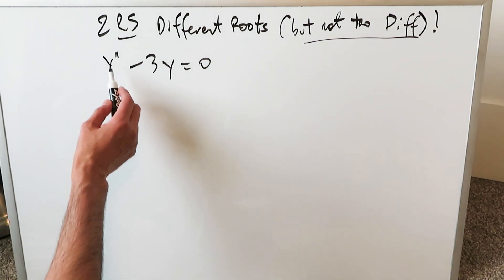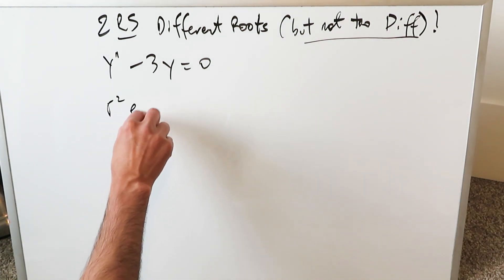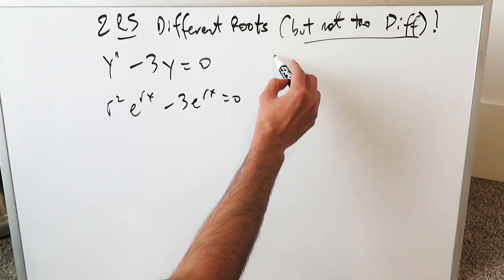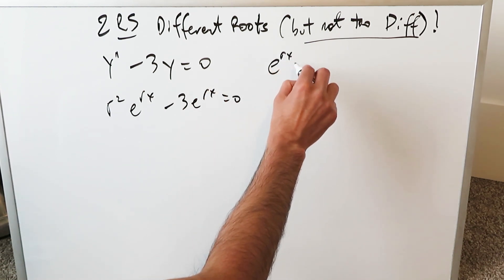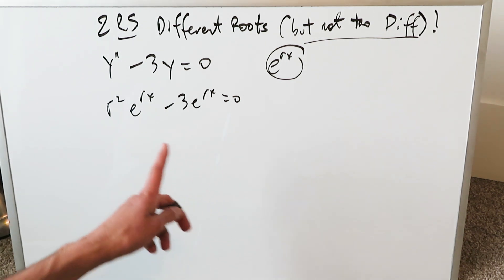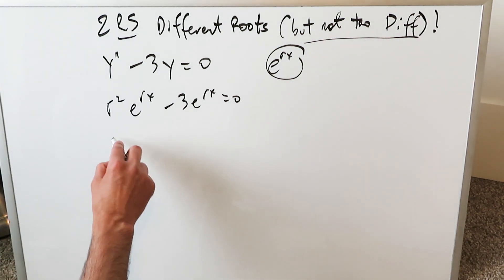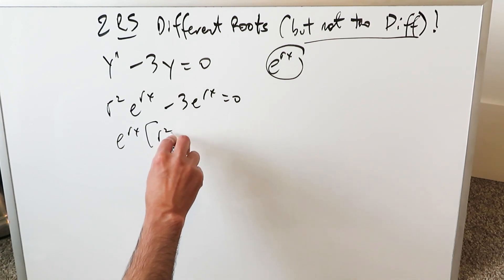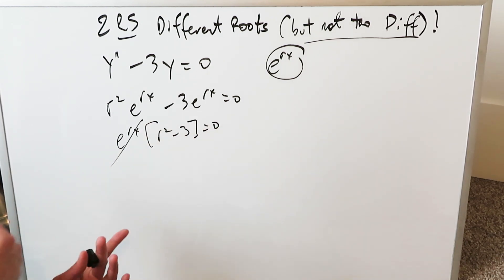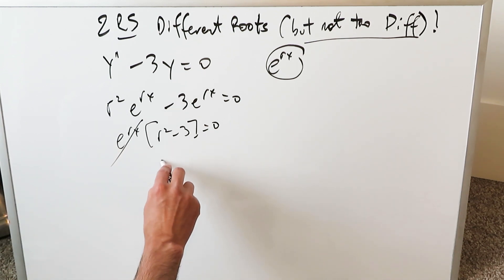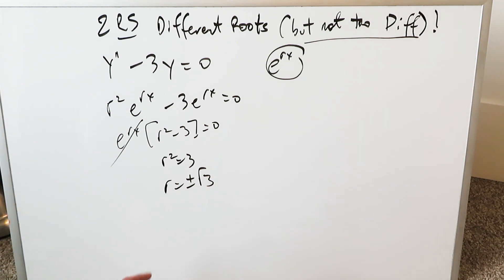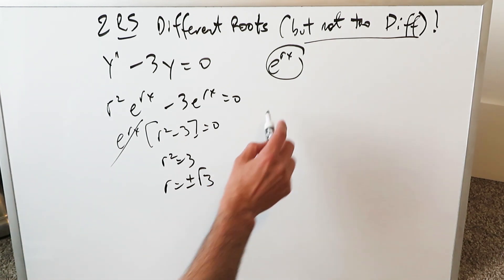When you look at this, you're working with r squared e to the rx minus 3 e to the rx equals 0, because you bring in varieties of derivatives — first order, second order, zero order. You isolate e to the rx and get r squared minus 3 equals 0. That term goes away, and r squared equals 3, so r is equal to plus and minus root 3.